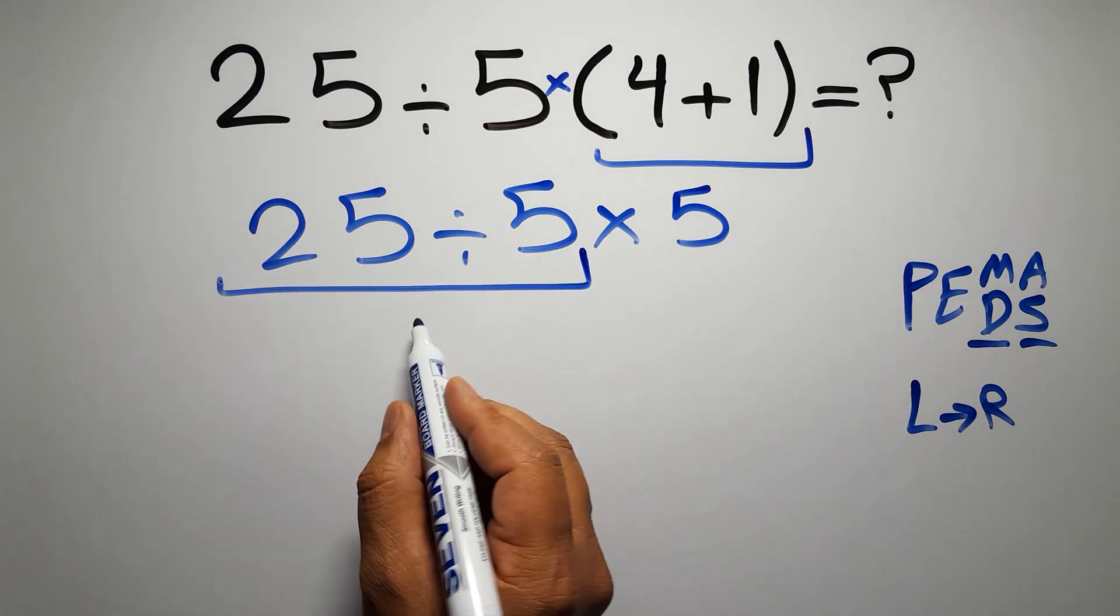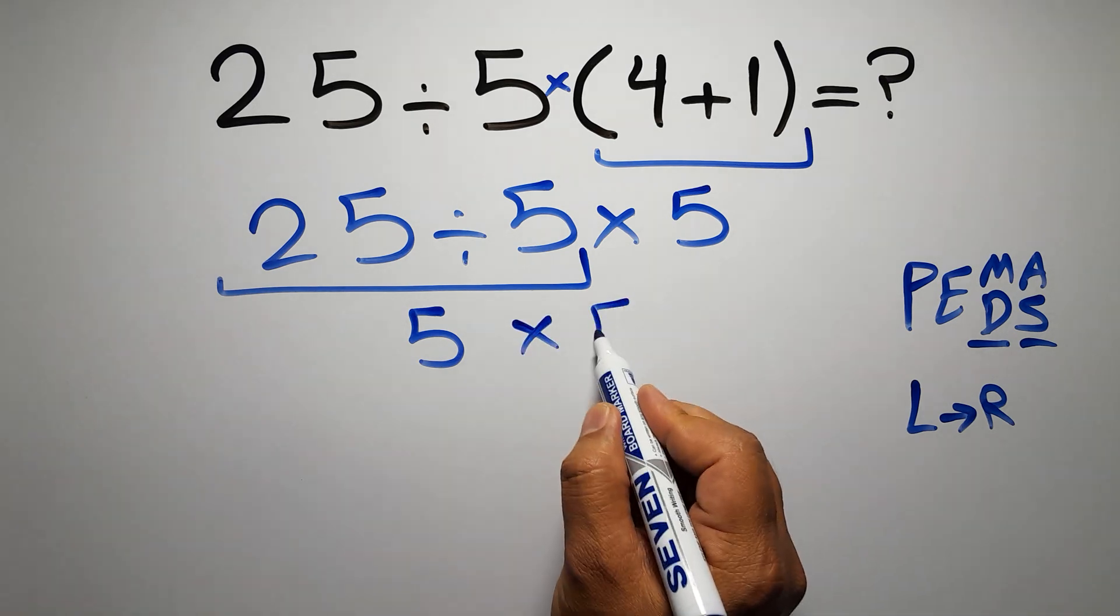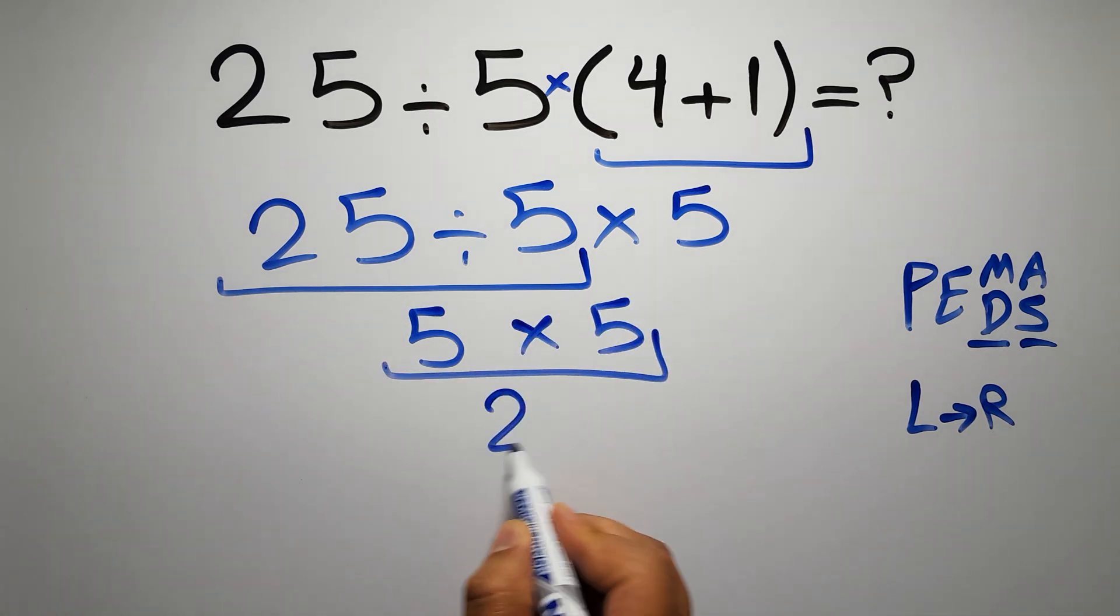And 5 times 5 gives us 25. This is our final answer to this problem. The correct answer is 25.